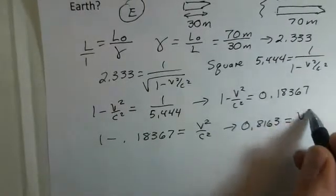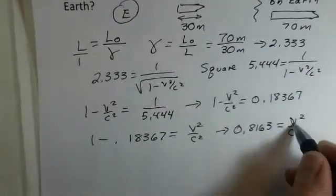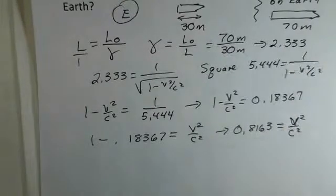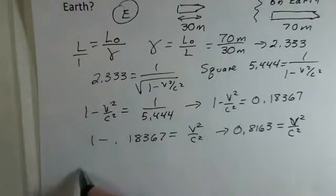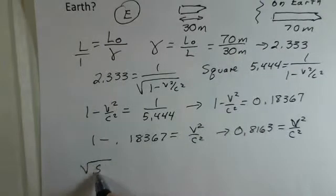What would you do next, solving for v? Let's take a square root of both sides. When I take the square root of both sides, the square root of 0.8163 is going to be equal to the square root of v² over c².